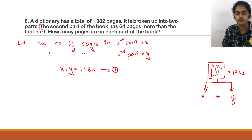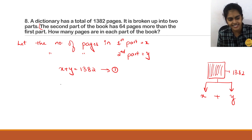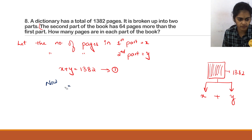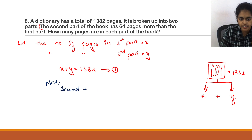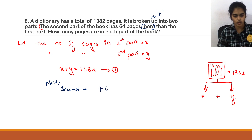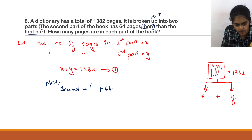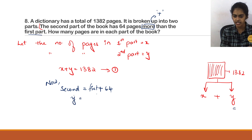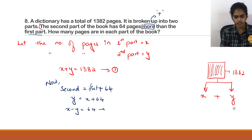Second condition: the second part of the book has 64 pages more than the first part. So y = x + 64, which we can write as x − y = −64. This is equation 2.